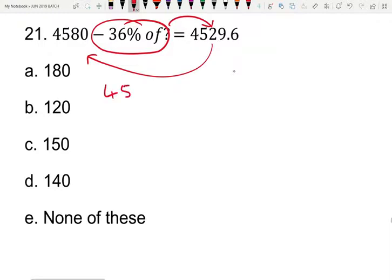After rearranging, we get: 4580 minus 4529.6 equals 36% of the unknown number.